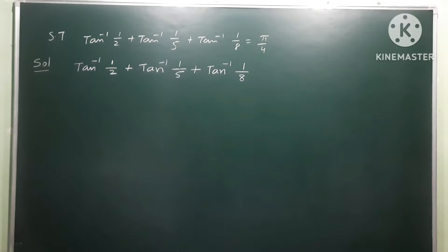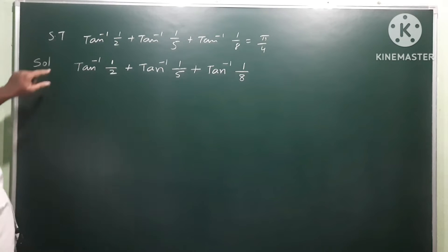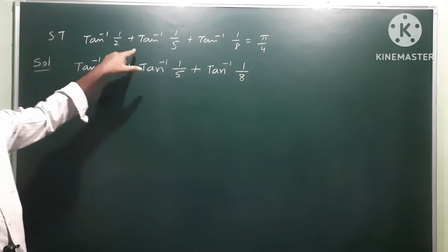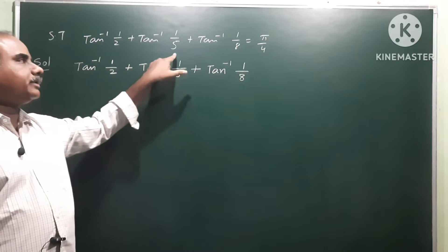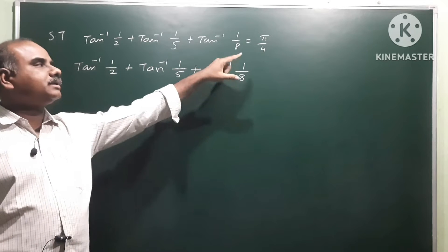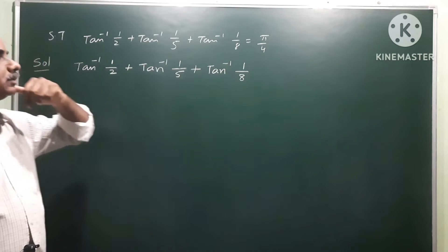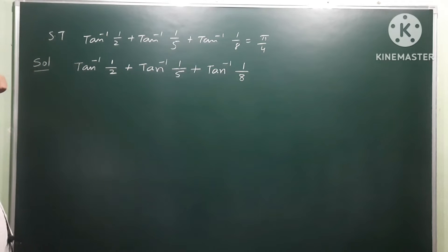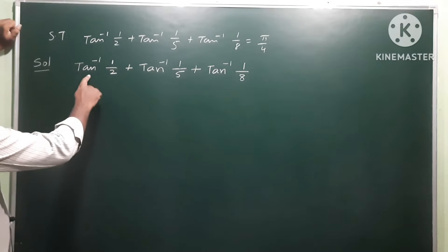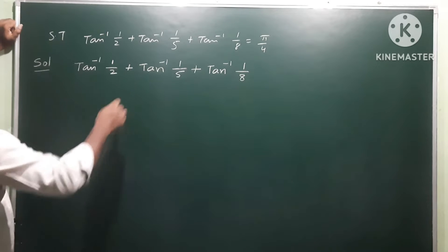Next problem: show that tan inverse 1/2 plus tan inverse 1/5 plus tan inverse 1/8 is equal to π/4. We have to show that. Let us take the LHS, so first two terms.